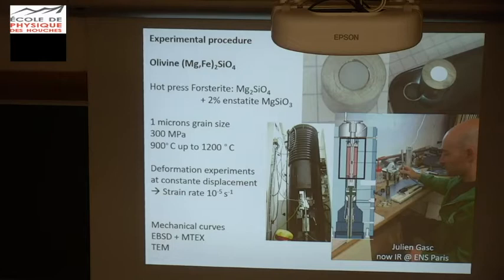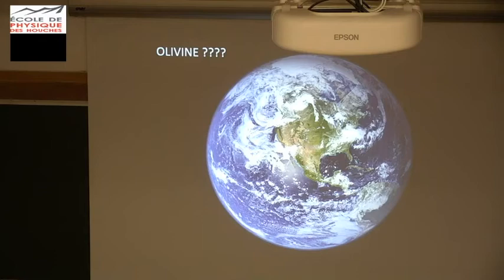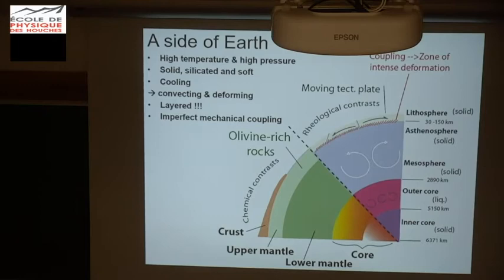We have a deformed forsterite, which is the magnesium end-member of a mineral called olivine, which contains magnesium and iron. This is an orthorhombic crystal, an orthorhombic silicate. Why olivine? I'm a geologist, so why are geologists obsessed by olivine, at least a part of them?